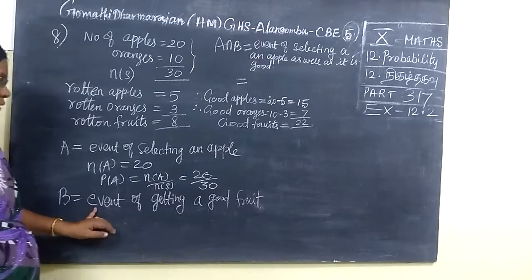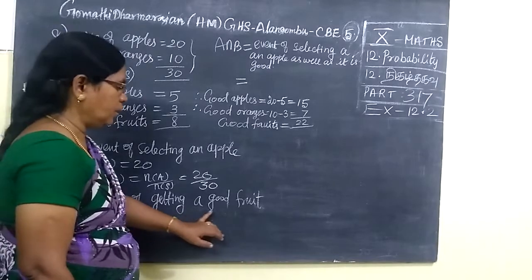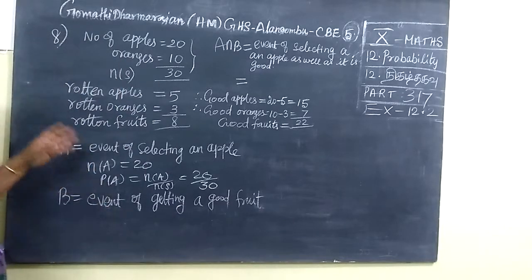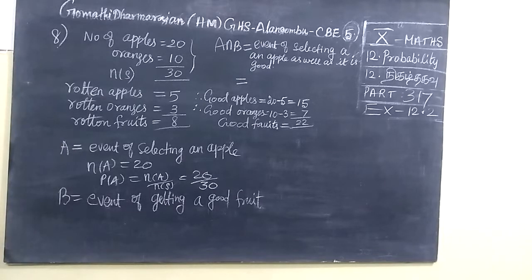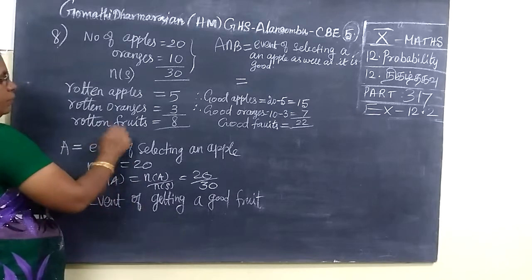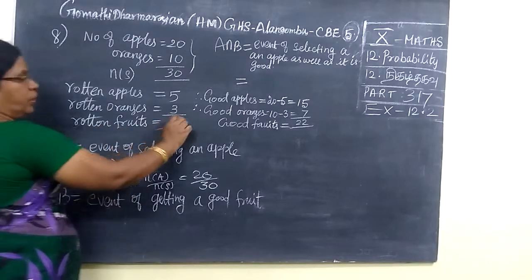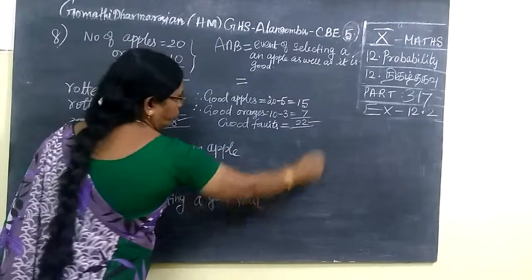We are selecting event of getting a good fruit. Either it is apples or oranges, you are selecting good fruit. Here, the question is event of selecting an apple, 20 by 30. So next we are selecting good fruit. Here, bad fruit, that means rotten fruit is 8. Good fruit is 22.